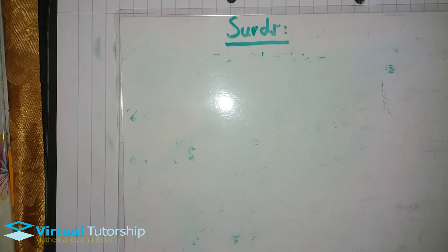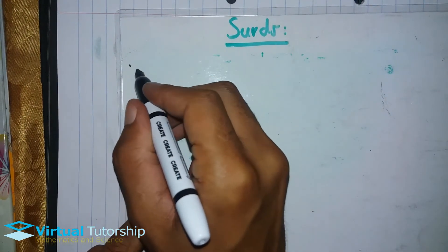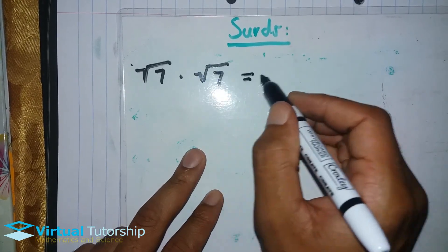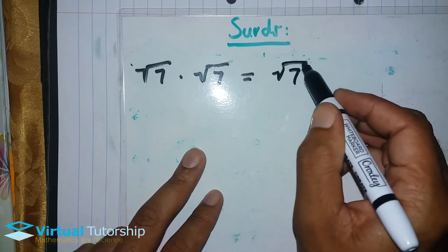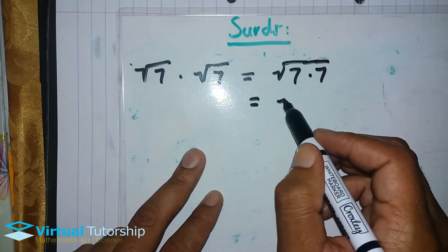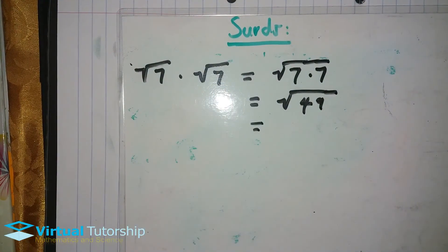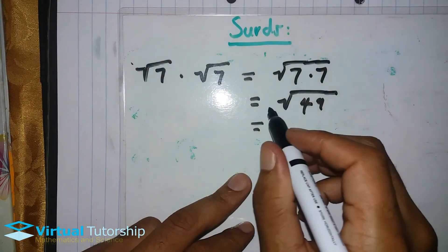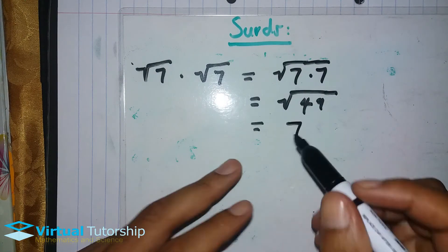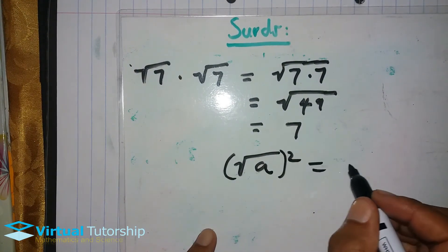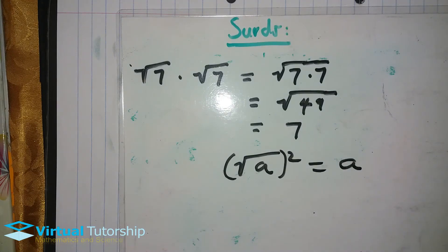Let's confirm with another one: square root of seven times square root of seven equals square root of 49, which is seven — since 49 is a perfect square. So remember: the square root of a number, squared, gives back that number. In other words, the n-th root of a, squared, equals a.